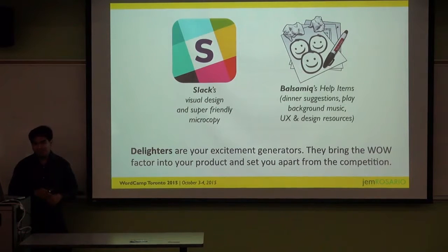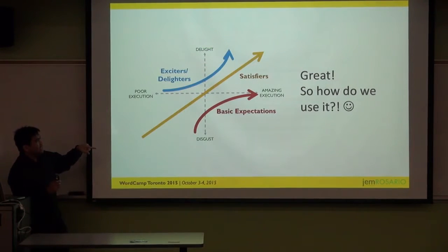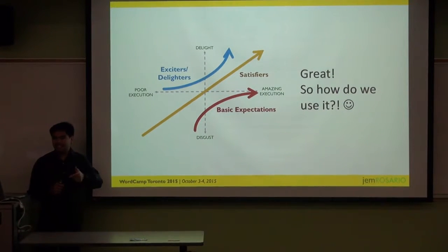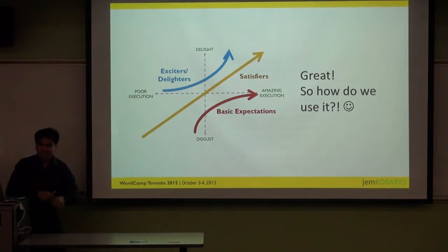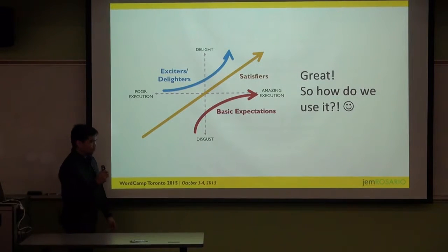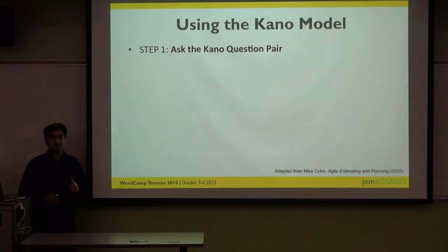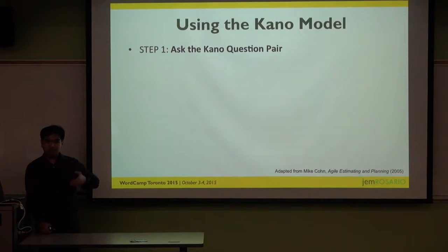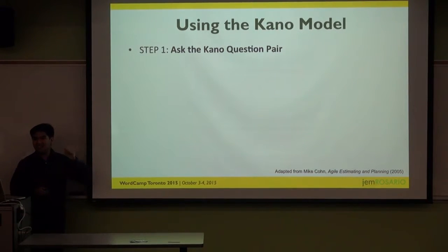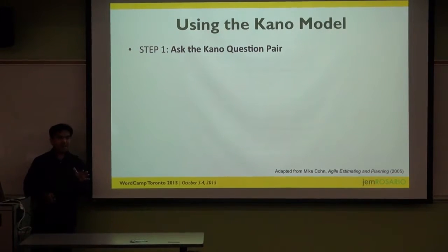So those are the three Kano attributes: Exciters and Delighters, Satisfiers, and Basic Expectations. That's the overview of the Kano Model. The next question is: how do we use it to get it working for our clients and organizations? There is a formal and an informal way of doing it. I'll present the formal way first, before going on to the informal methods that Christine and I have leveraged to bring delight to our projects.